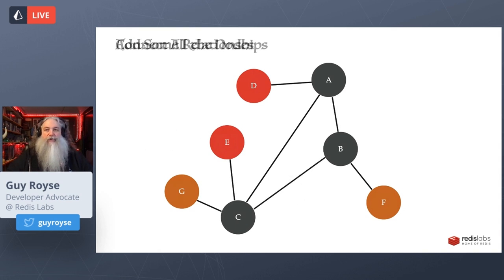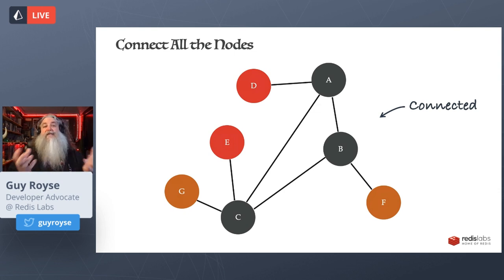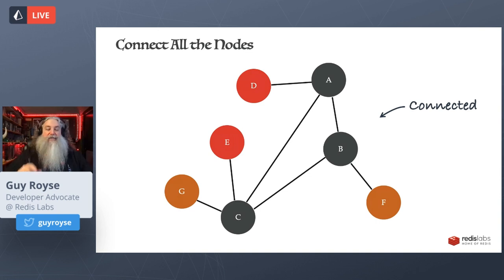Let's connect all our nodes together to create what's called a connected graph. This graph is connected because any node has a path — either directly or through another node — to any other node on the graph. So node D is connected to node F by way of A and B, or by way of A, C, and B. A fully connected graph is where every node is connected to every other node directly — like a star with a pentagon drawn around it, which is a fully connected graph of five nodes.